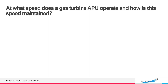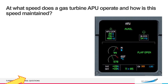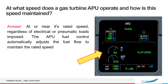At what speed does a gas turbine APU operate and how is this speed maintained? At or near its rated speed, regardless of electrical or pneumatic loads imposed. The APU fuel control automatically adjusts the fuel flow to maintain the rated speed.